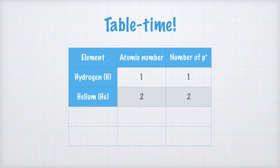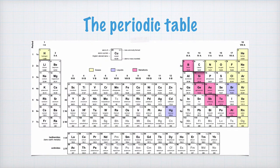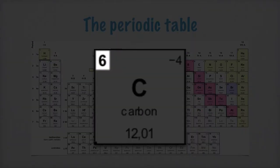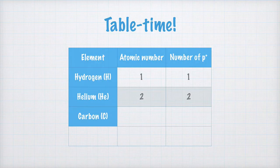Let's take another example, just to be sure: carbon. What's the atomic number for carbon? Let's check the periodic table again. This is where we find carbon, and if we zoom in, we can see that the atomic number for carbon is 6. We turn back to our table and fill in the atomic number. And the number of protons is 6, of course.